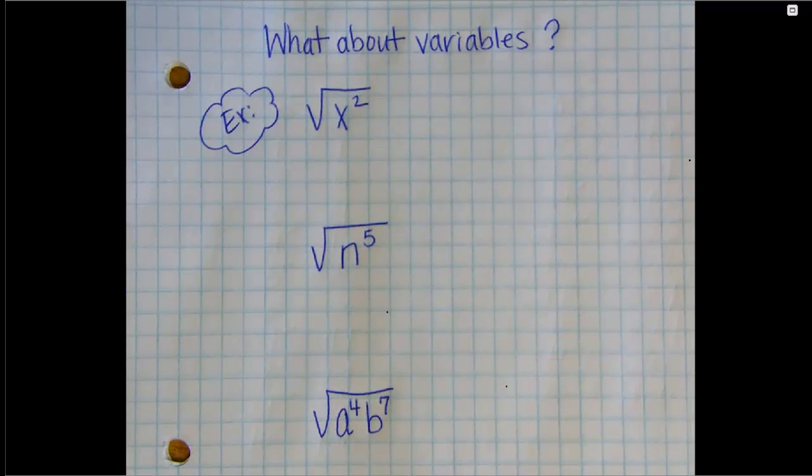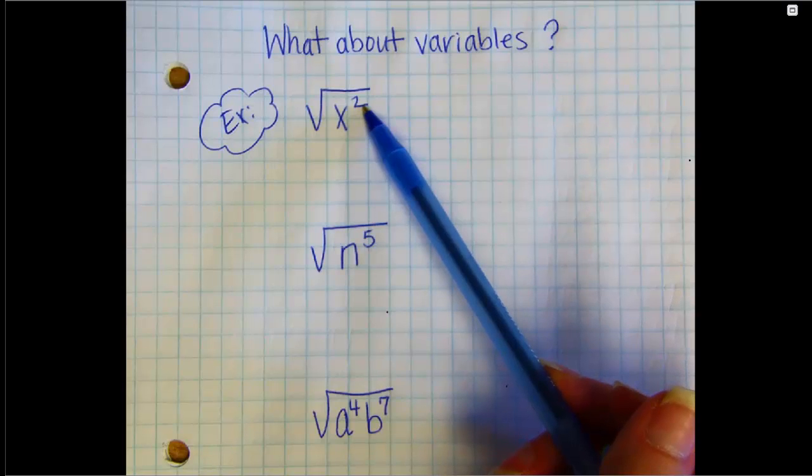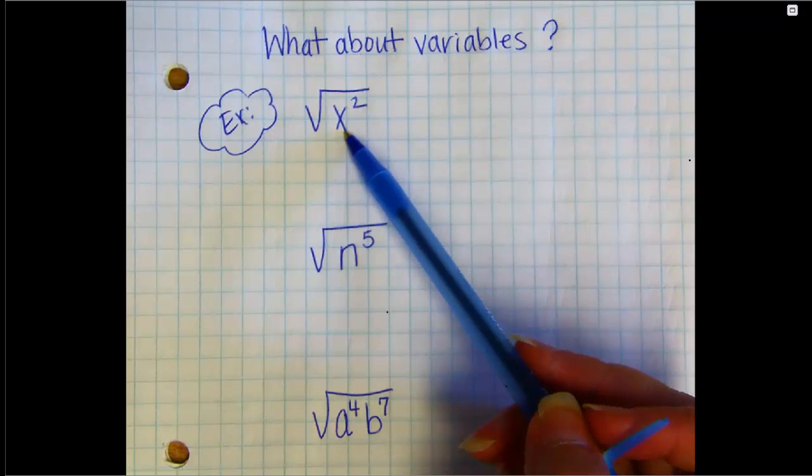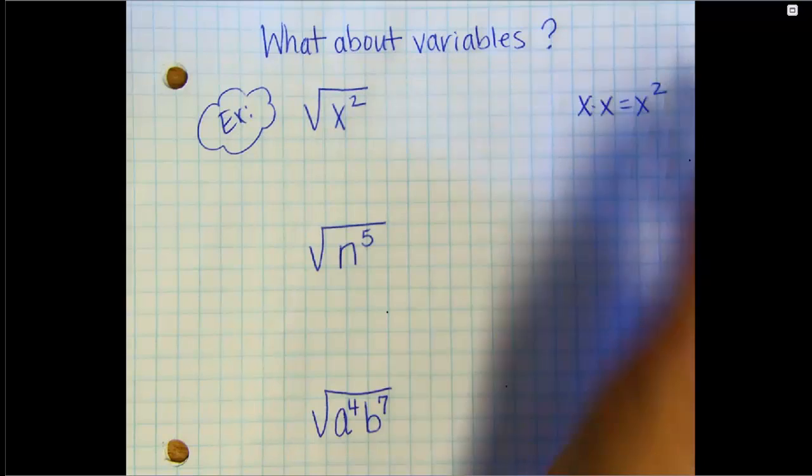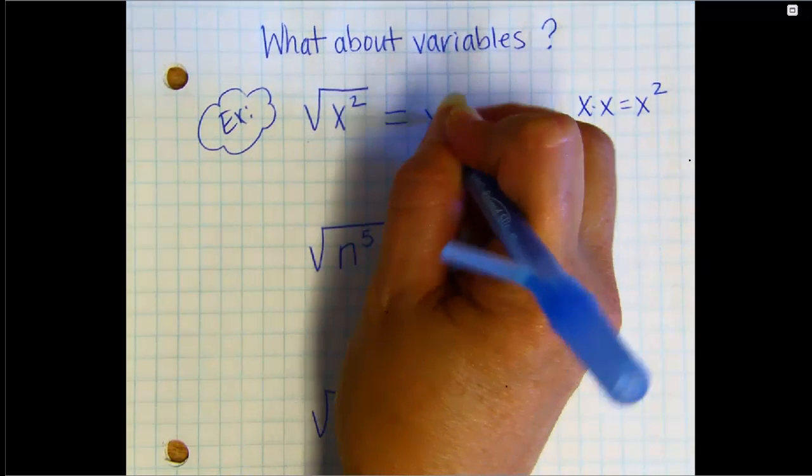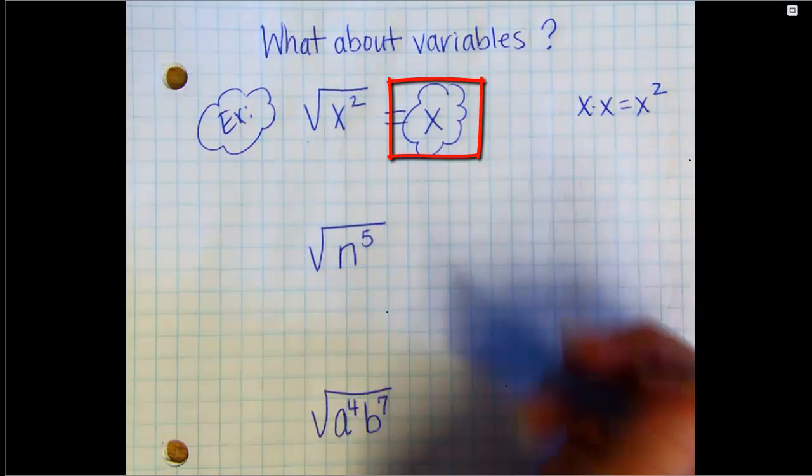Okay. So you also need to be able to handle variables under the square root. And keep in mind my sign at the front of the room and something that I'll say all the time, and that math is consistent. So if you have a perfect square number or variable under your square root, that'll come out nicely. X squared is a perfect square because X times X gives you X squared, which means the square root of X squared is just plain X.